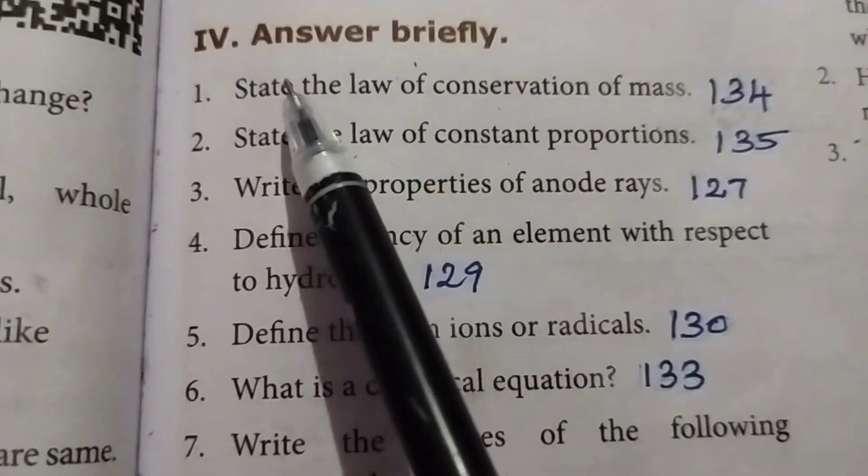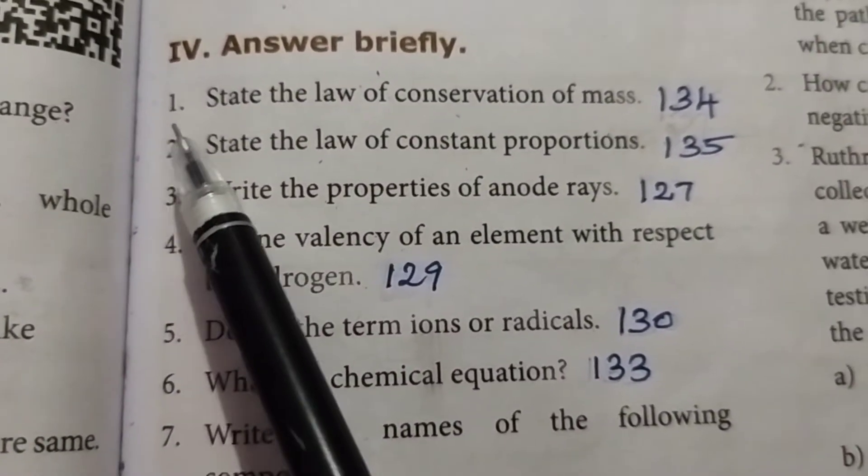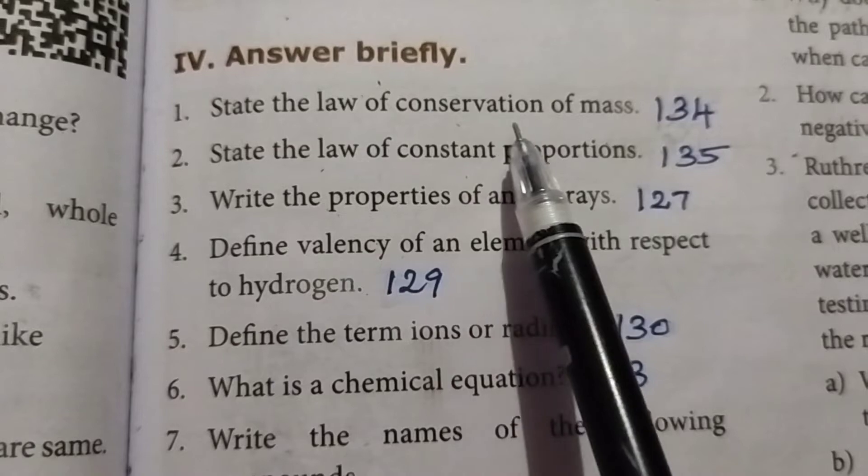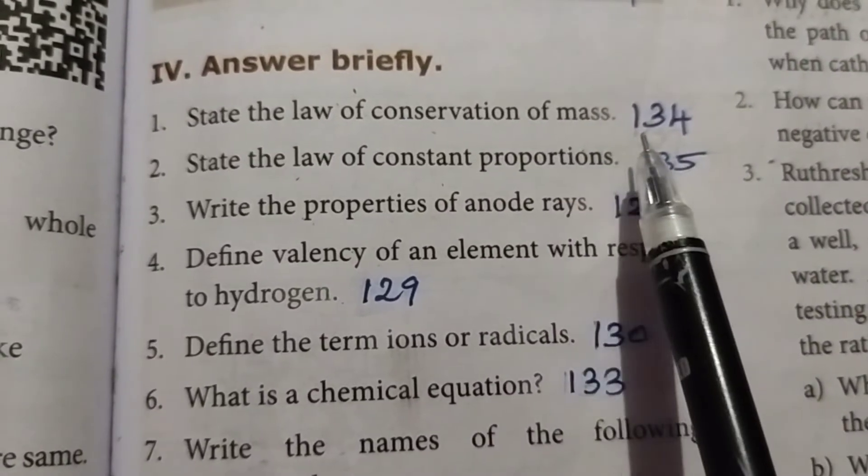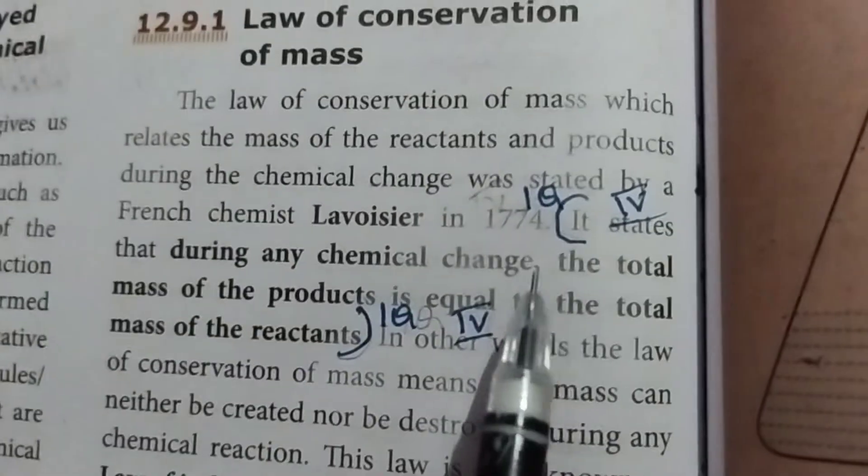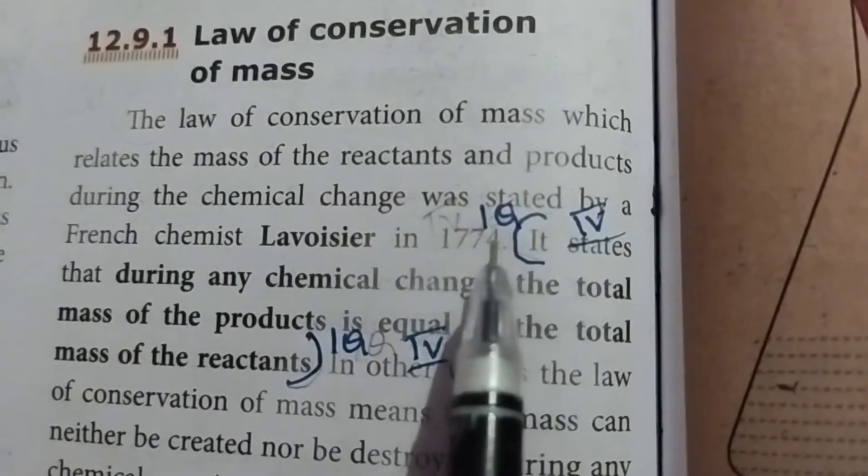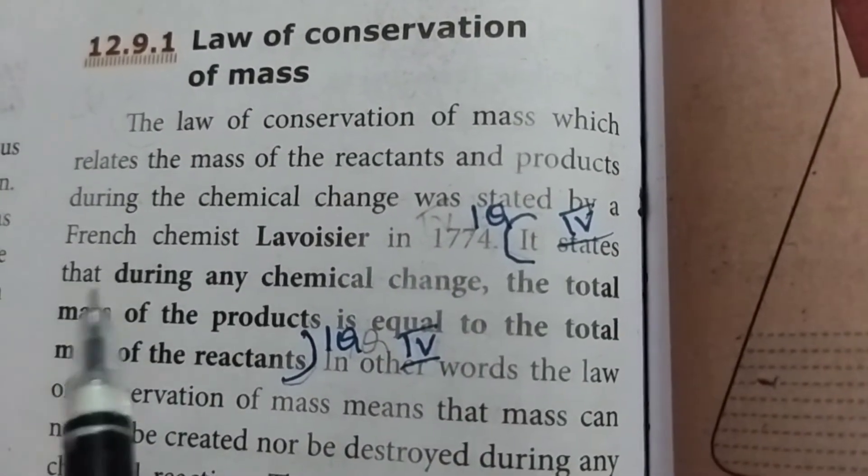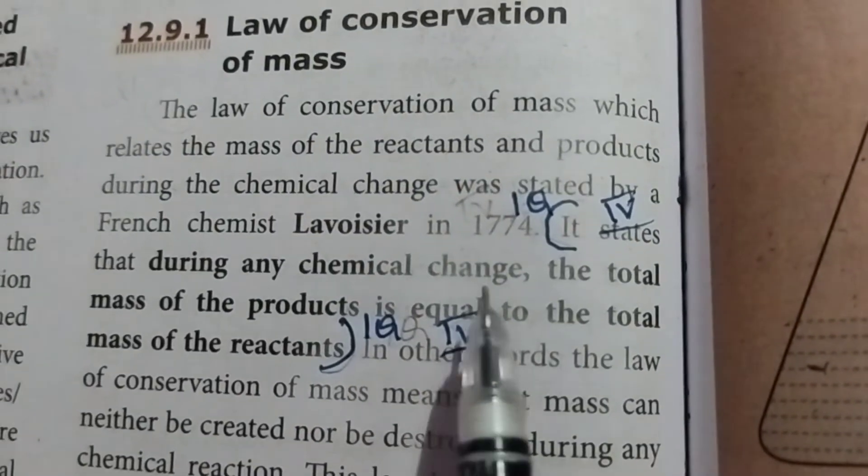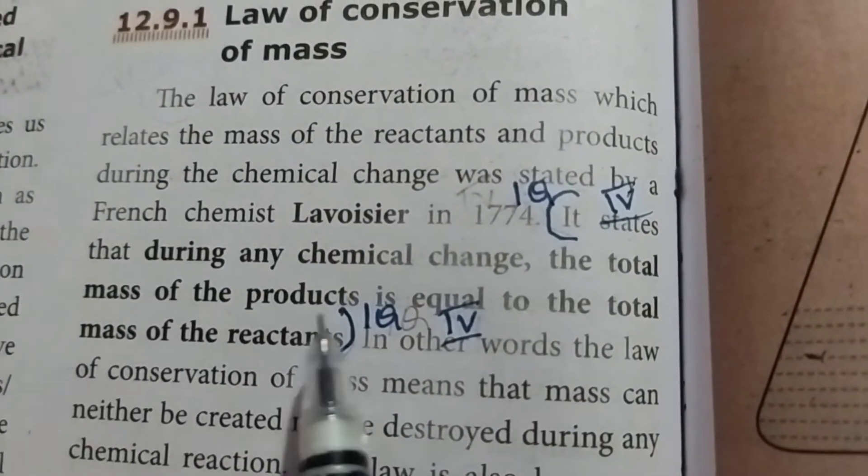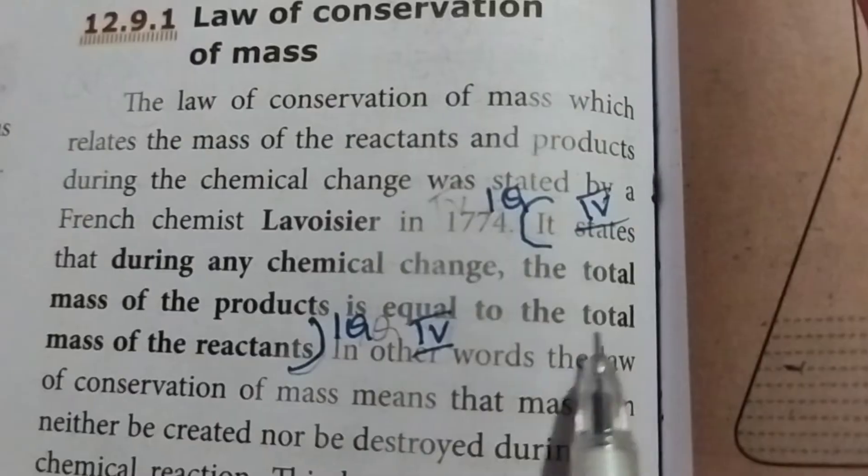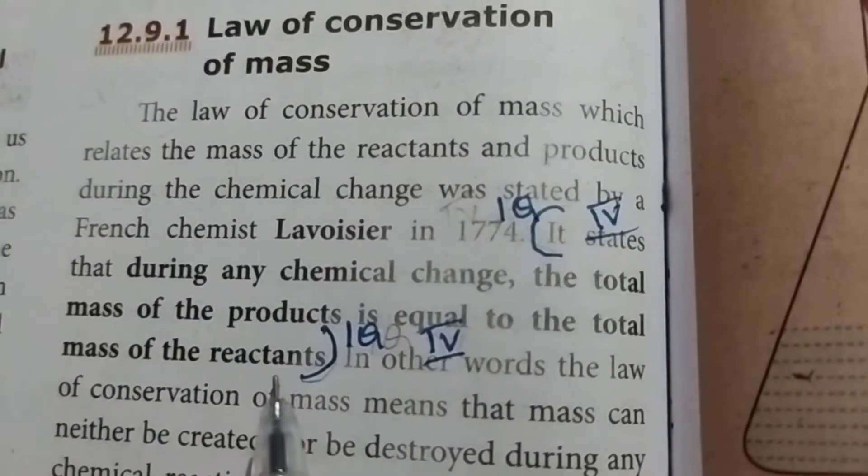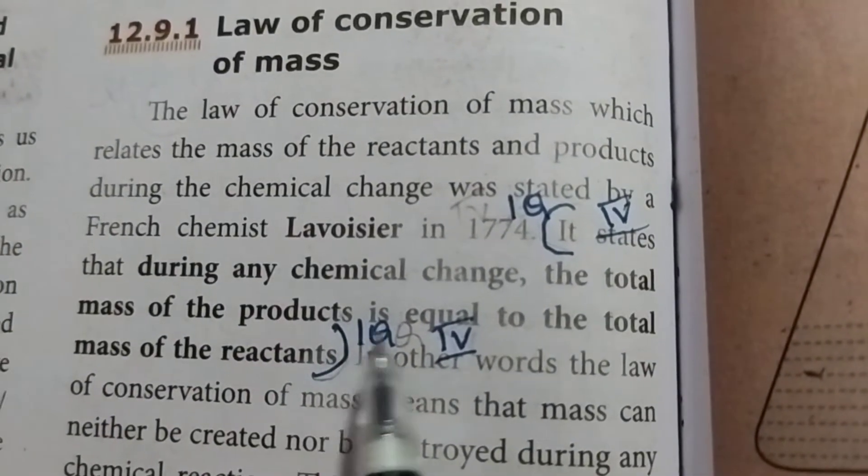Fourth Roman letter, answer briefly. First one: state the law of conservation of mass. Take page number 134. The law of conservation of mass states that during any chemical change, the total mass of the product is equal to the total mass of the reactants. Fourth Roman letter, first question answer.